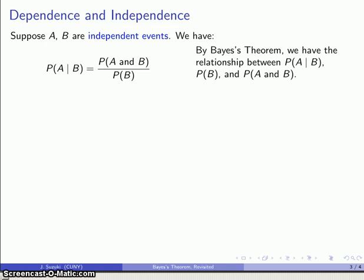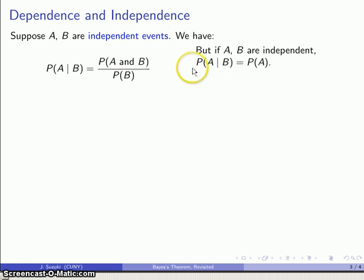However, there's something useful that happens. If the events are, in fact, independent, then I know that the probability of A given B is the same as the probability of A by itself.